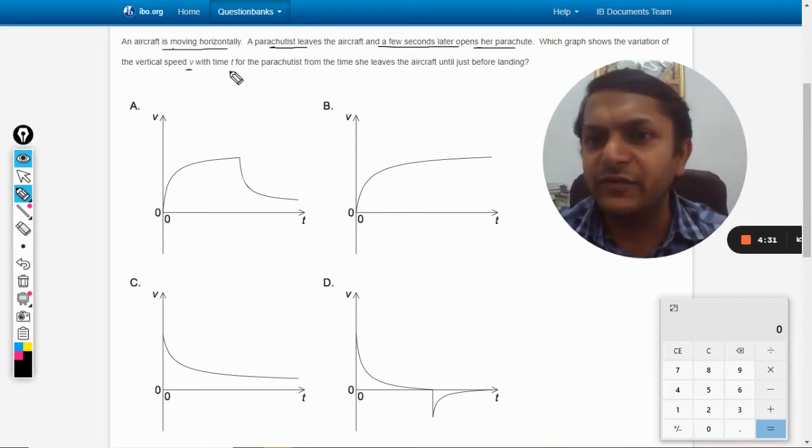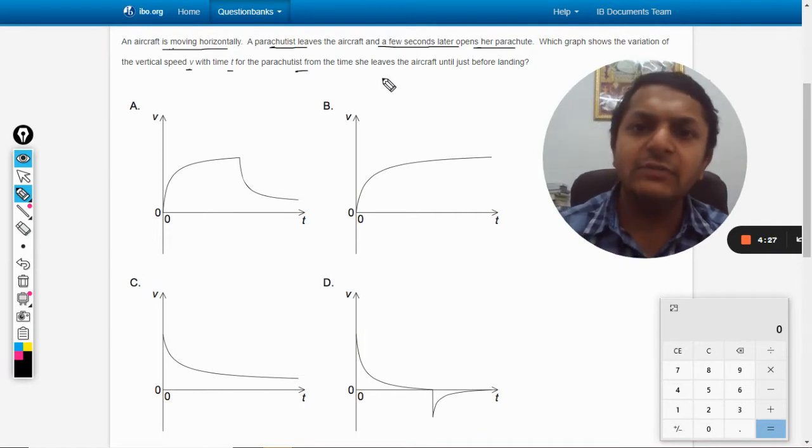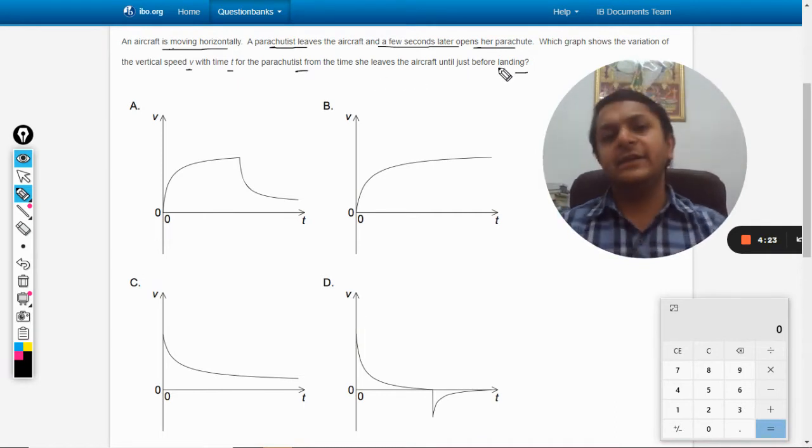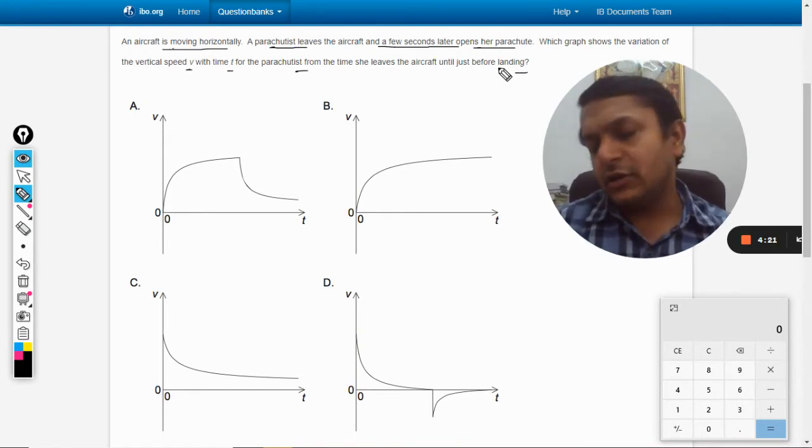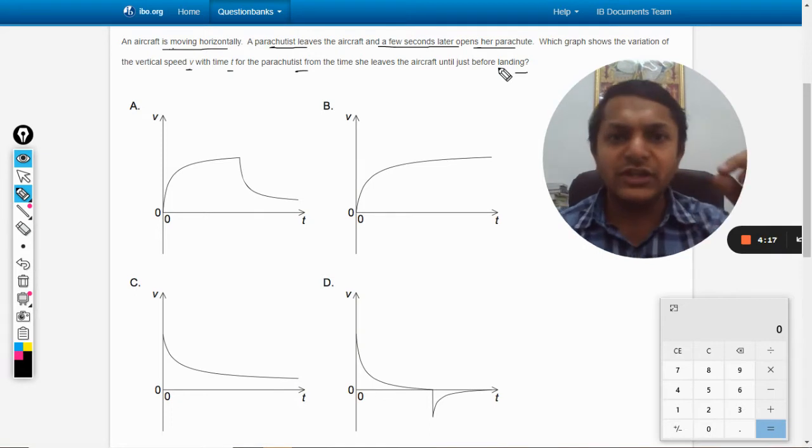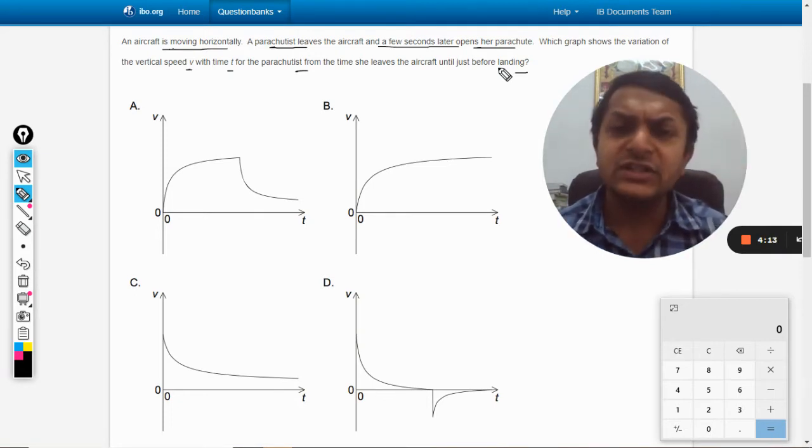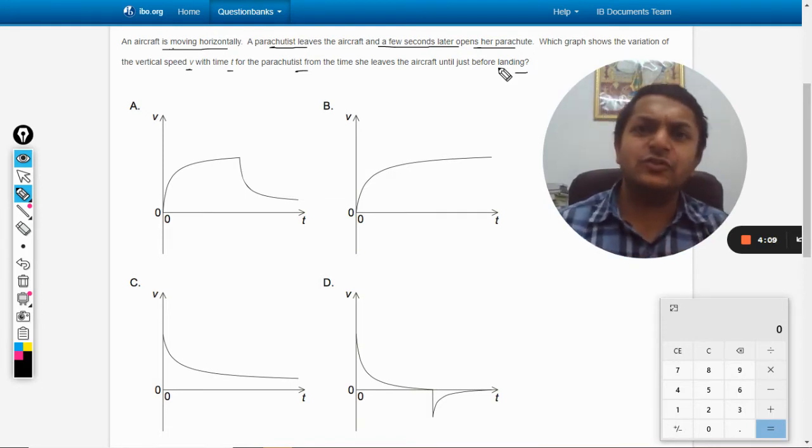There is an aircraft moving in a horizontal fashion. The parachutist jumps out of it, and after a few seconds she opens the parachute. Before she opens the parachute, what are the things that will happen?